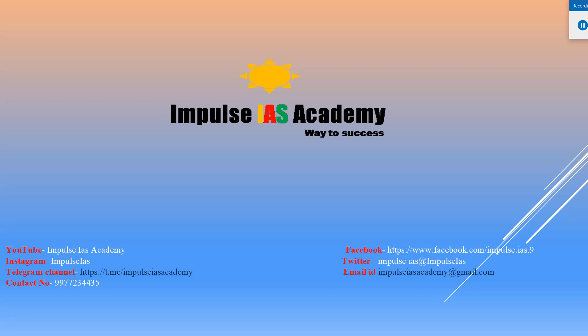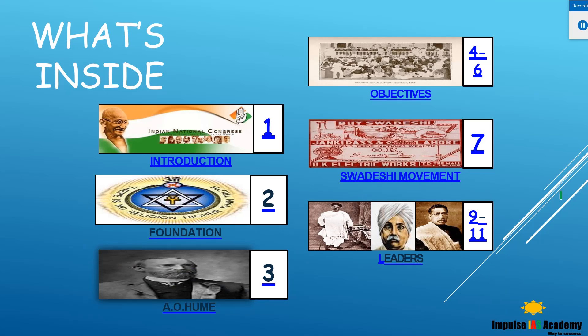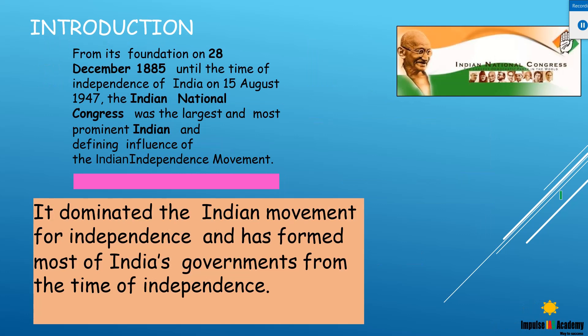Now we'll start the lecture and continue with Indian history. Today we are going to talk about the Indian National Congress. Earlier we completed the Revolt of 1857, which was a watershed event in Indian history. Now we will see how the Indian National Congress proved to be a major institution which channelized the national movement. The Indian National Congress was formed on the 28th of December 1885, and it was one of the most prominent and largest Indian institutions that influenced the Indian independence movement.